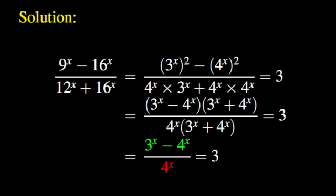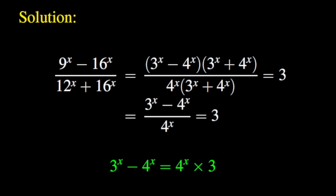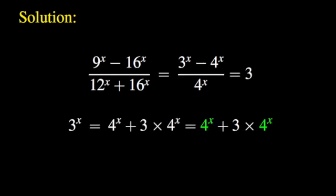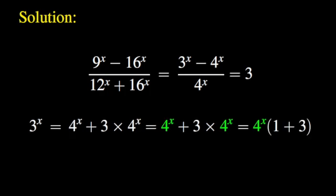All these algebraic manipulations have greatly reduced the complexity of the problem. The whole problem is therefore simplified as the equation 3 to the power x minus 4 to the power x equal to 4 to the power x times 3. We move 4 to the power x to the right-hand side and obtain 4 to the power x plus 3 times 4 to the power x. We clearly see that the right-hand side has a common factor 4 to the power x, so we factor it out and obtain 4 to the power x times the quantity 1 plus 3.